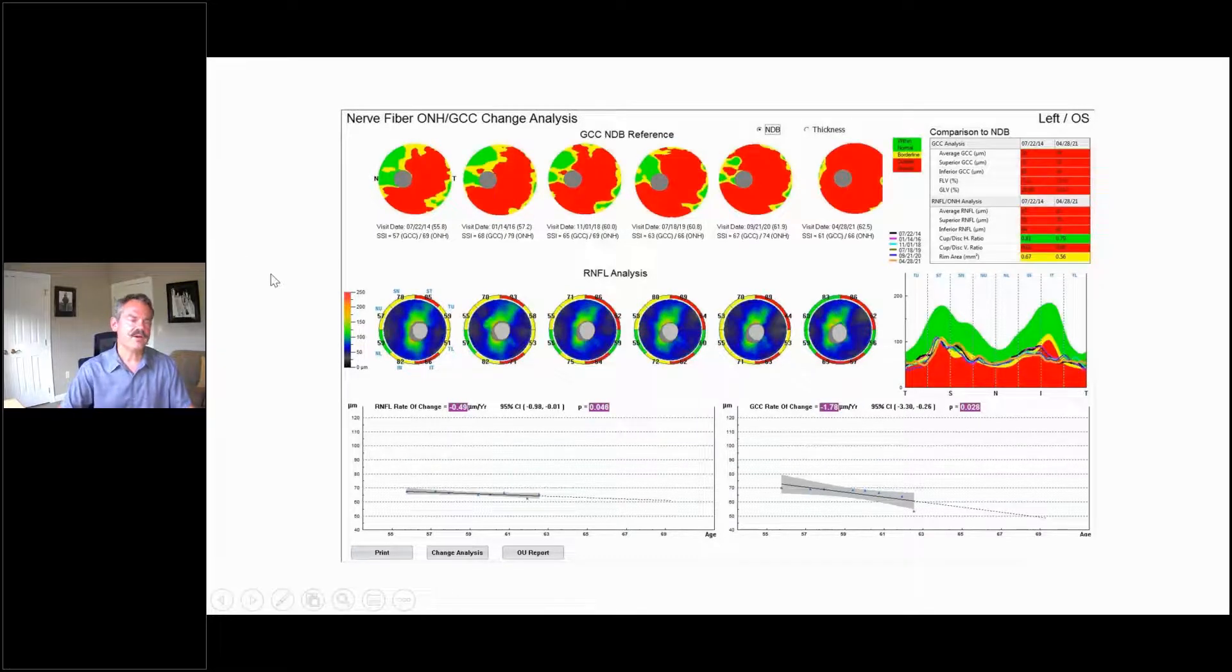The left eye OCT does not look nearly as good. We can see the ganglion cell complex is really washed out. We're getting red across the board.